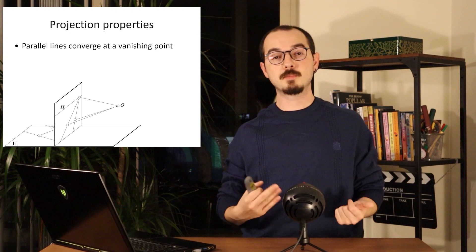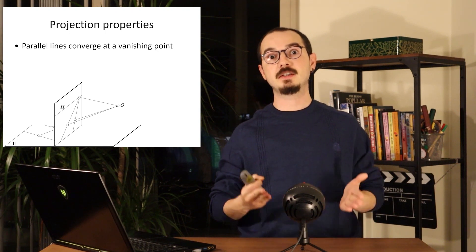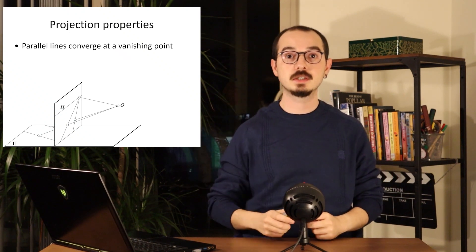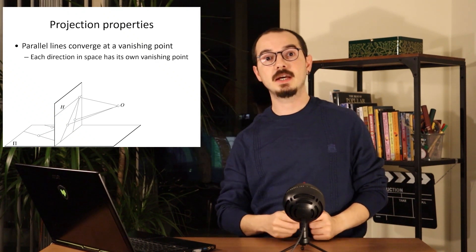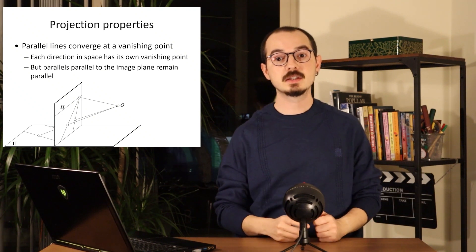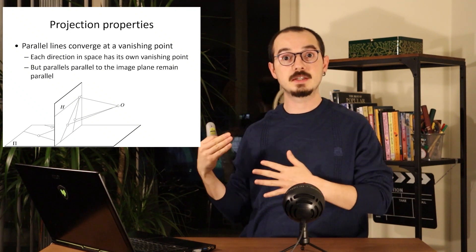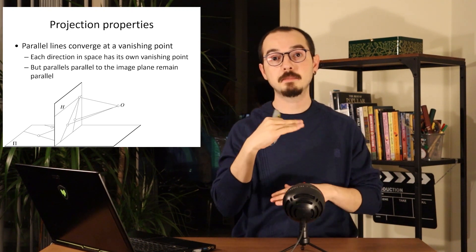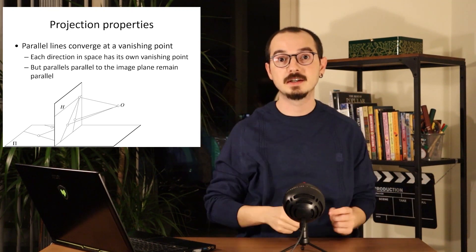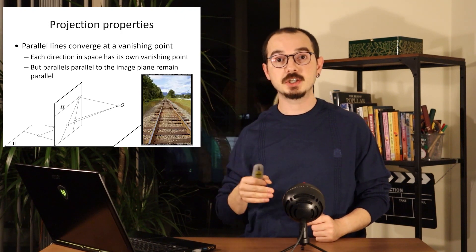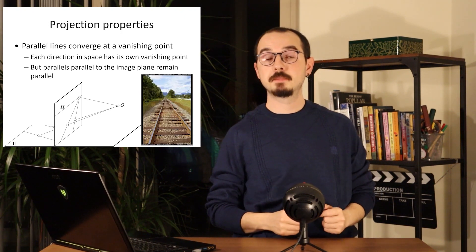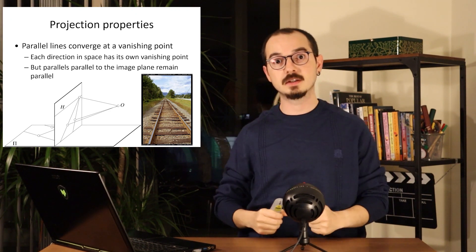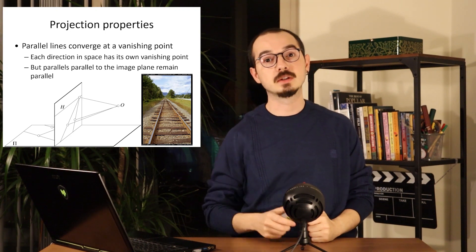One thing we call a perspective effect is vanishing lines. Parallel lines in the real world end up at the same place when the distance is infinite. Each direction in space has its own vanishing lines. But if the original lines in 3D space are actually parallel to our image plane, they will still remain parallel and will not vanish. Lines that are actually parallel to each other in the real world will end up vanishing together at one point — that is called the vanishing point.